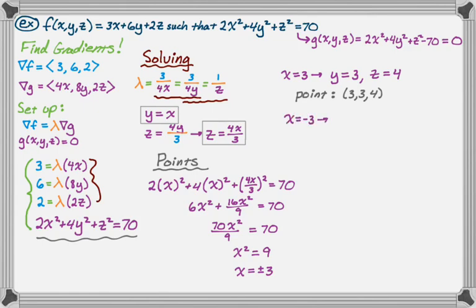And then when x is negative 3, you get the reverse. You get y equals negative 3 because y equals x, and then you get z equals negative 4 because z equals 4 times x over 3. So that gives me one more point: negative 3, negative 3, and negative 4.